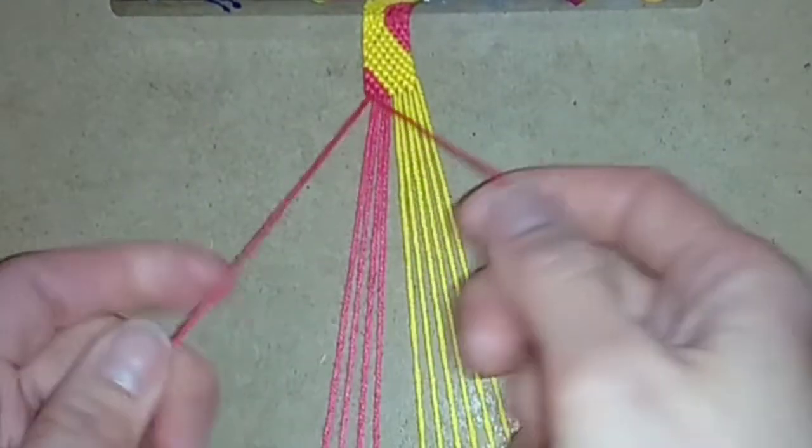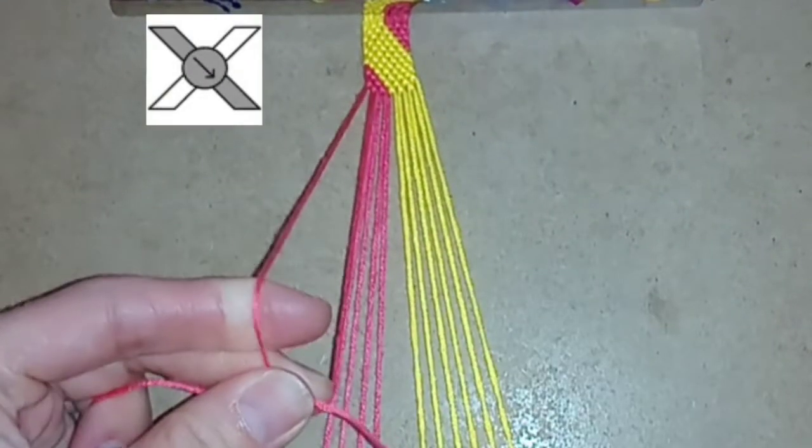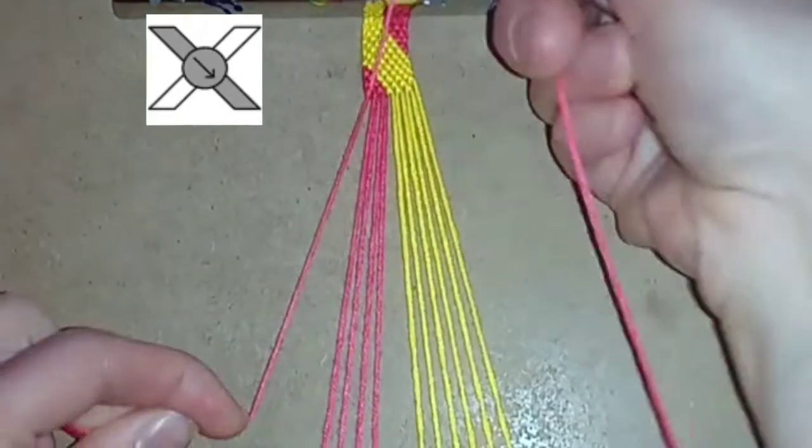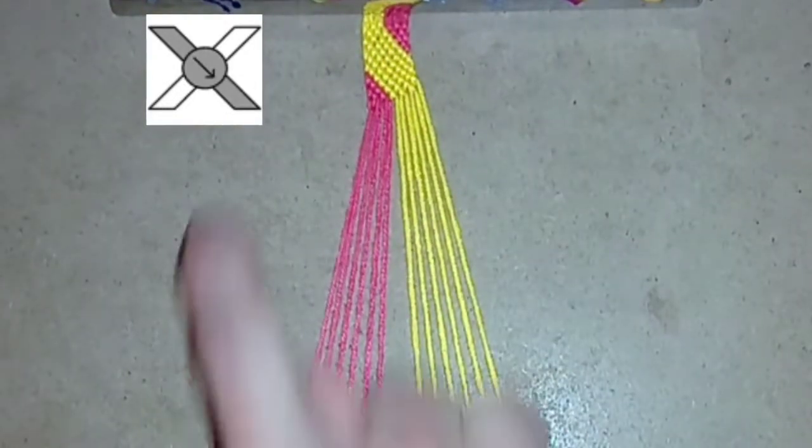For section two you want to start by doing row one in exactly the same way as you did in section one. You just want to do forward knots all the way from this side to that side.